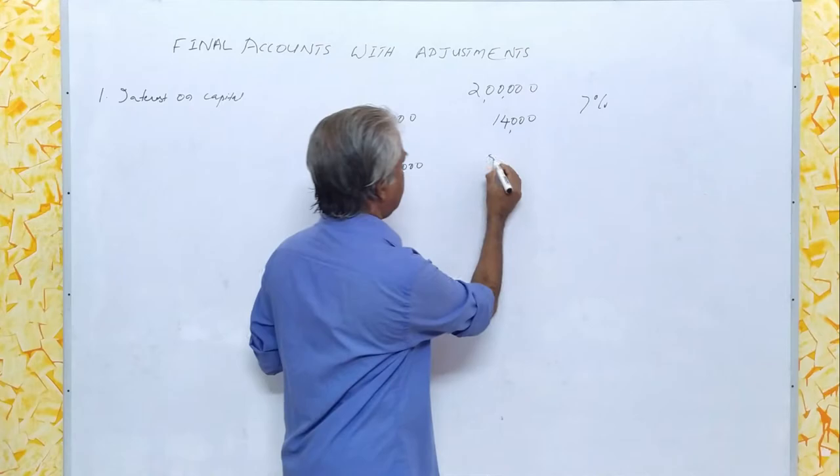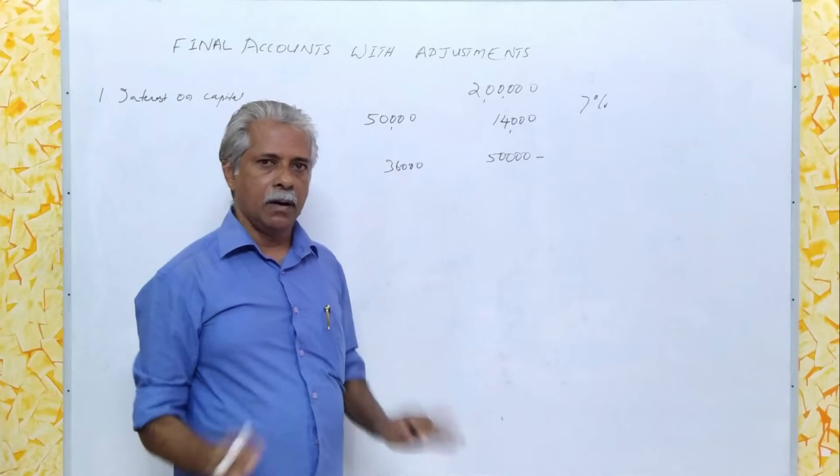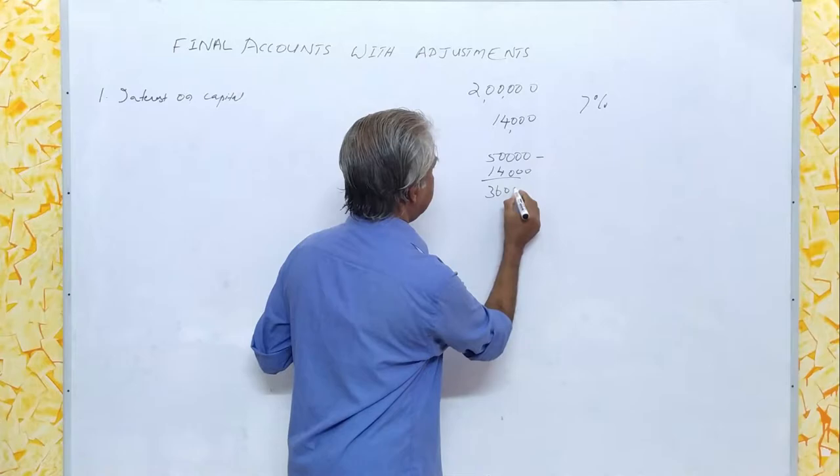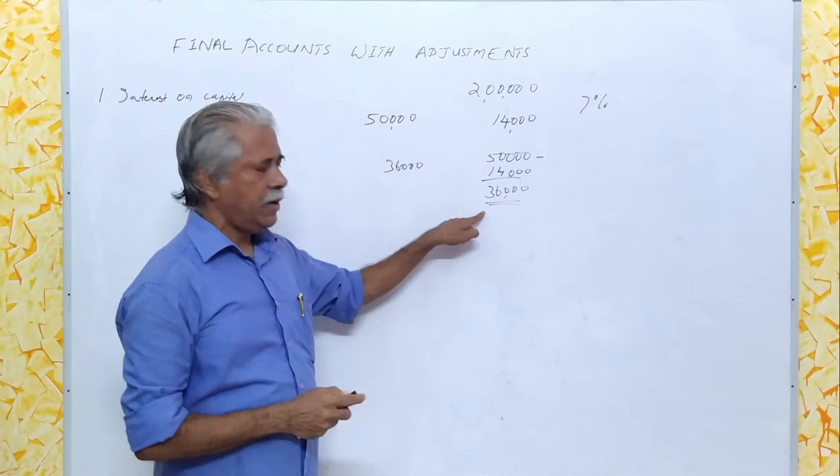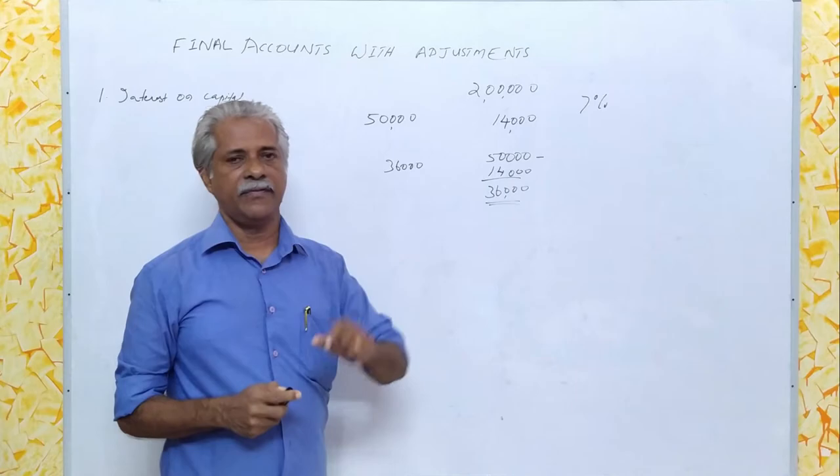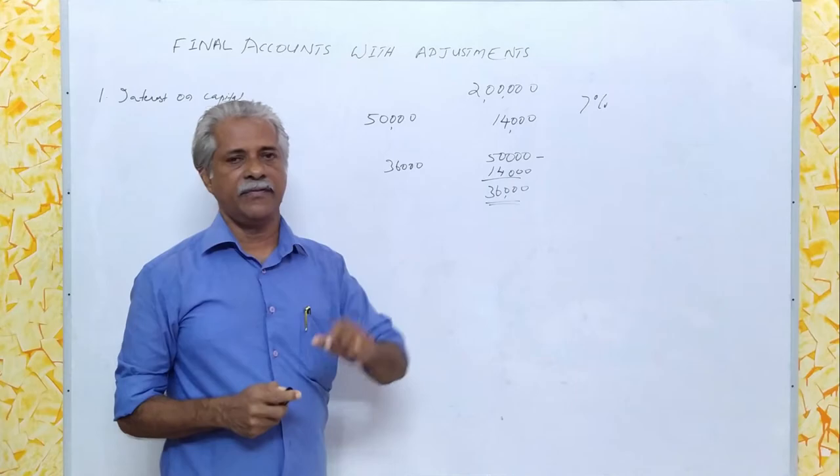That is Rs. 50,000, the total income, minus the alternative income lost, that is Rs. 14,000. The remaining balance is Rs. 36,000. So, in order to arrive at Rs. 36,000 — that is the real profit — provision should be made in the profit and loss account for interest on capital as an expense.